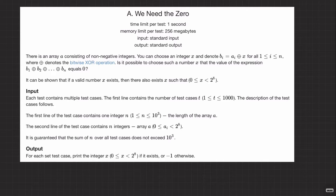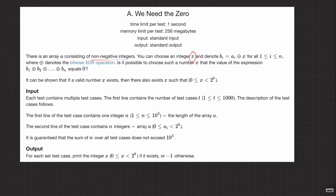There is an array A consisting of non-negative integers — so zero and positive integers. You can choose an integer x and denote b_i equals a_i XOR x for all i from 1 to n. So basically, pick a value x and XOR it with all the elements of A. Is it possible to choose such a number x that the value of the expression b1 XOR b2 XOR ... XOR bn equals zero?